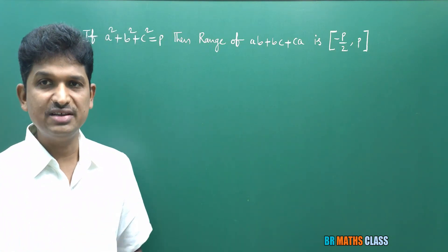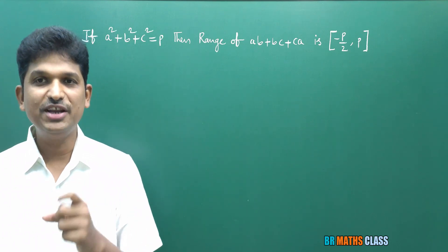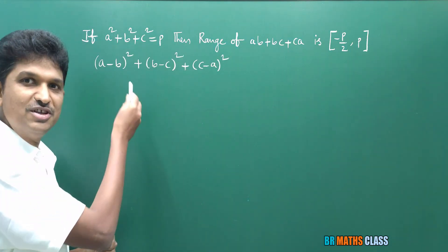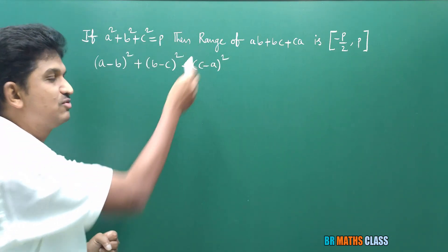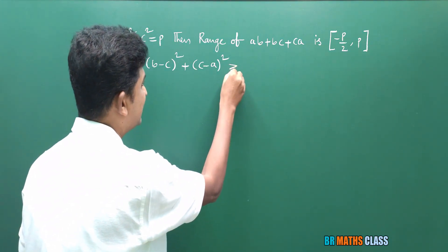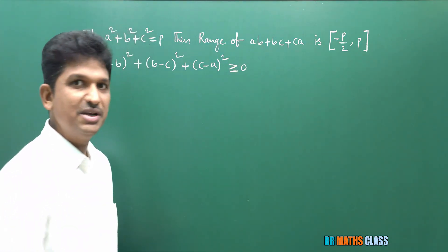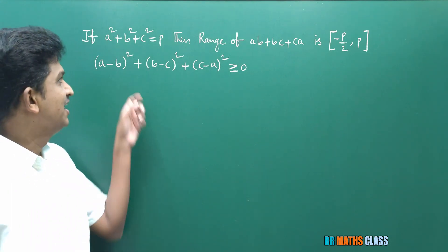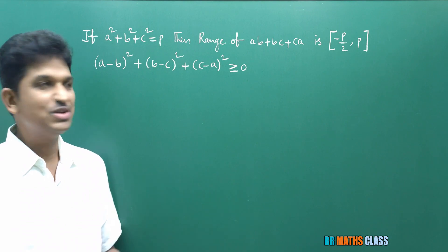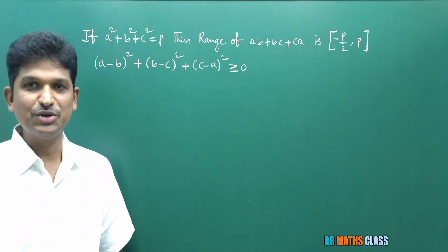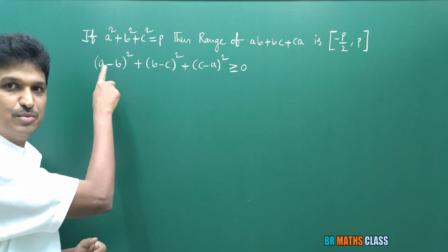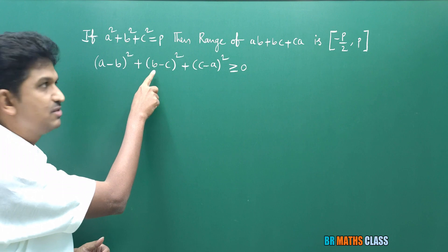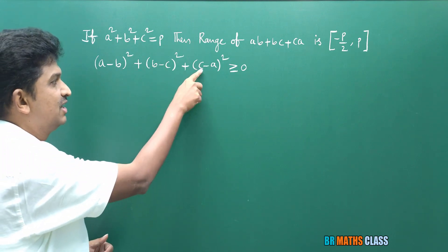I am going to derive this result. Understanding this derivation is very important to understand the third and fourth problems in this class. Observe: (A−B)² + (B−C)² + (C−A)² is clearly greater than or equal to zero for any three real numbers A, B, C. Now I'll expand this. A minus B whole square gives A² + B² − 2AB.